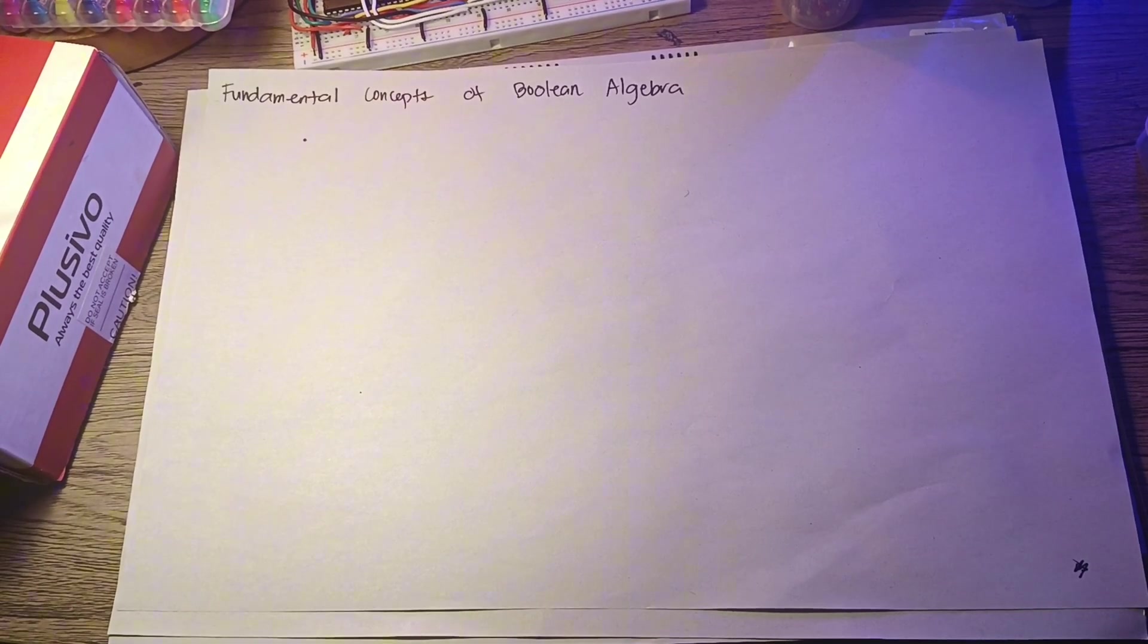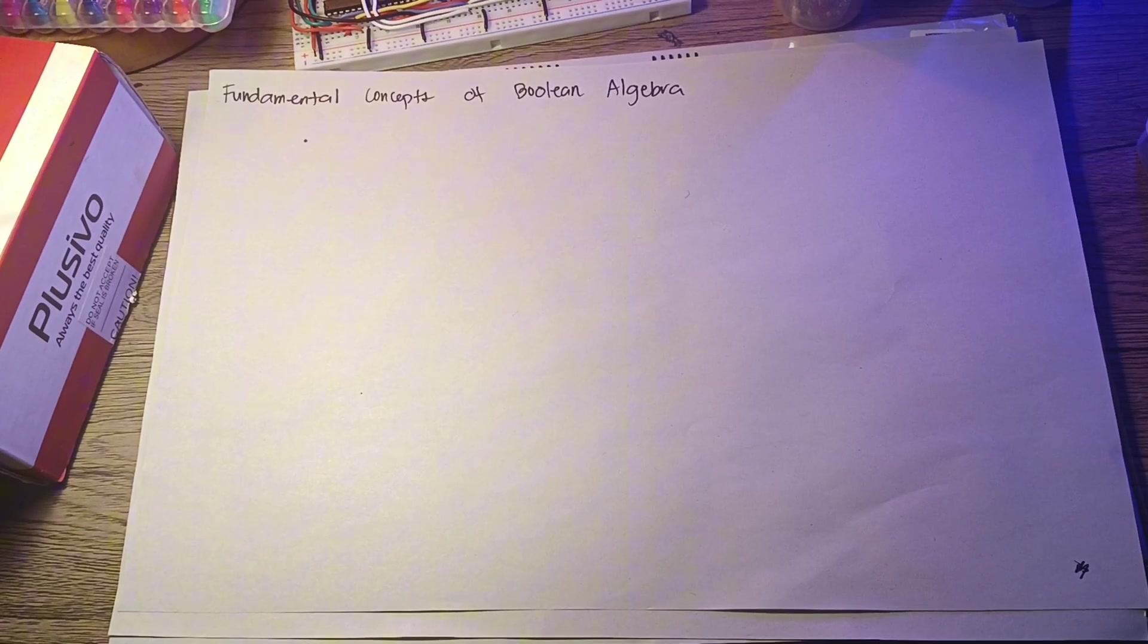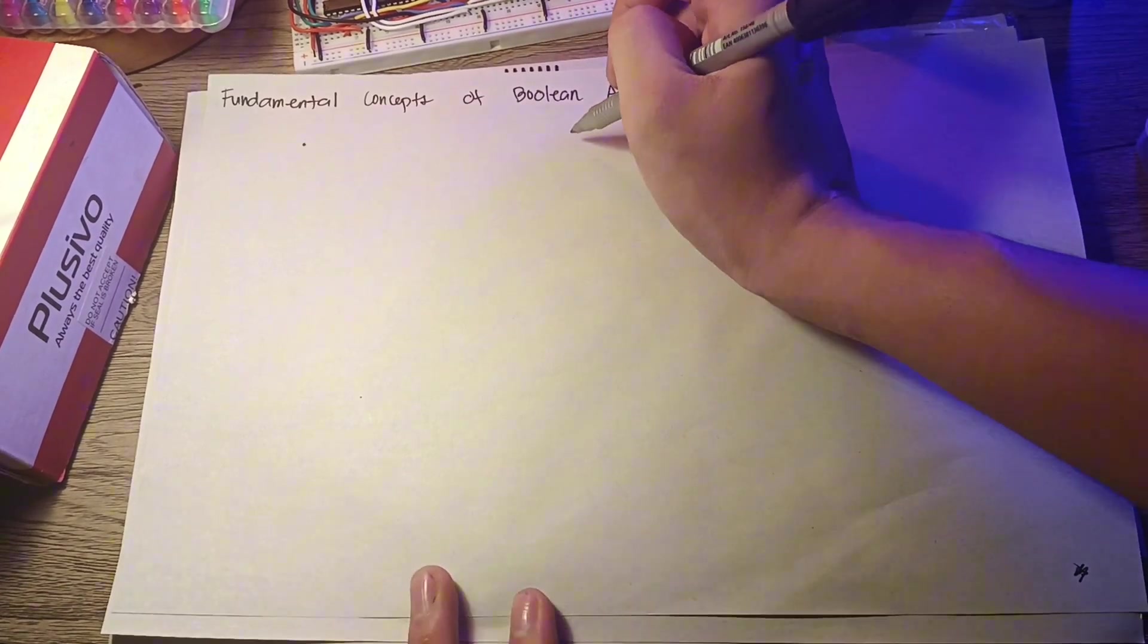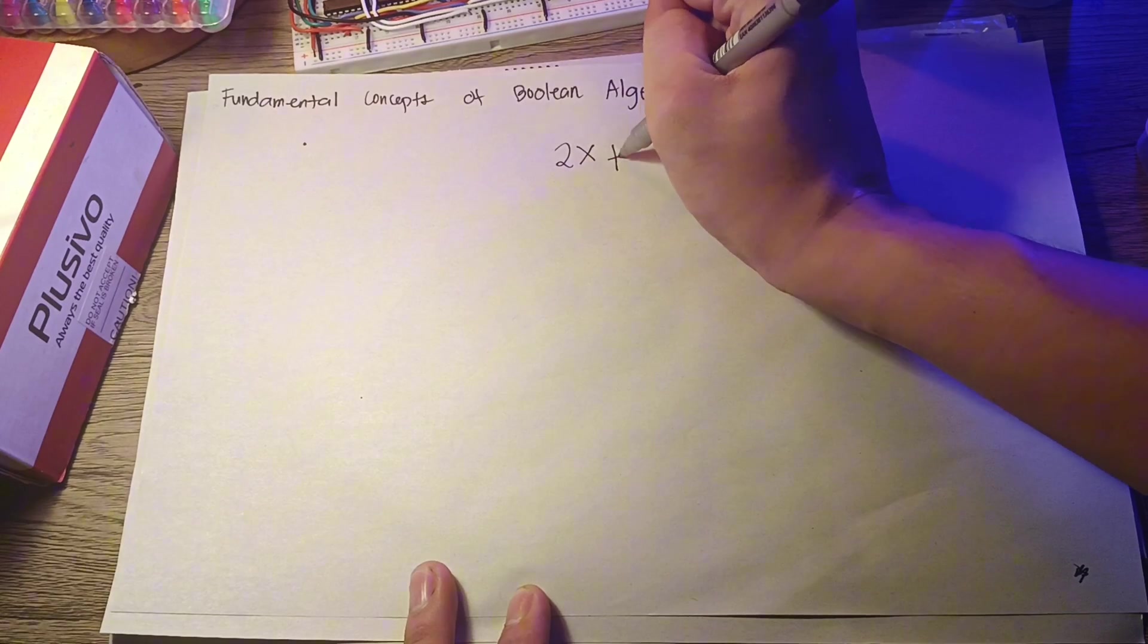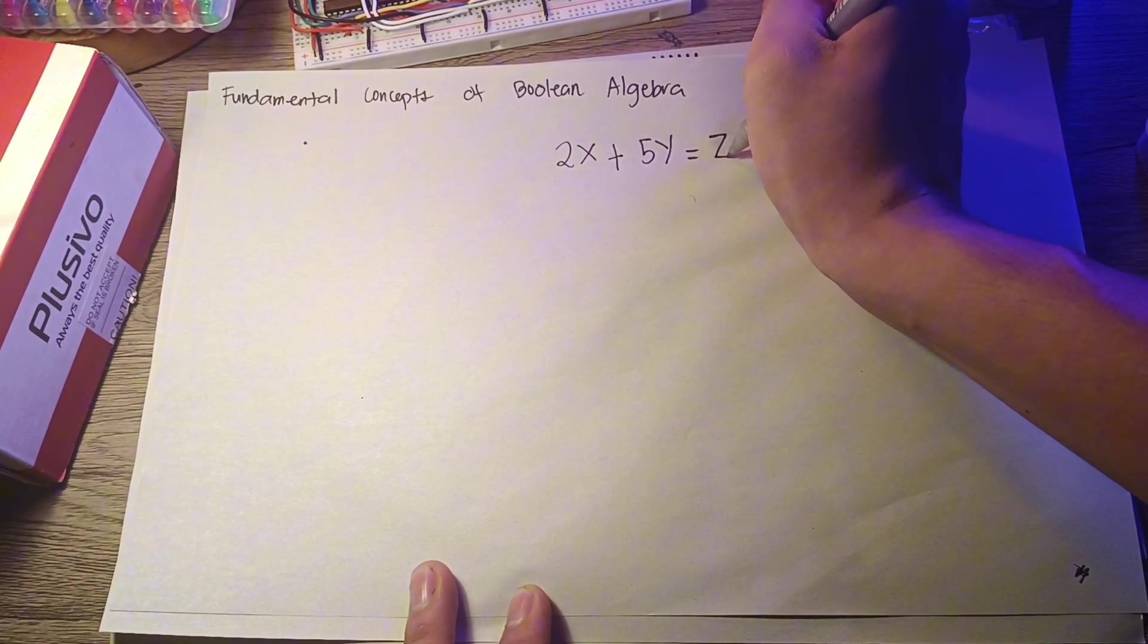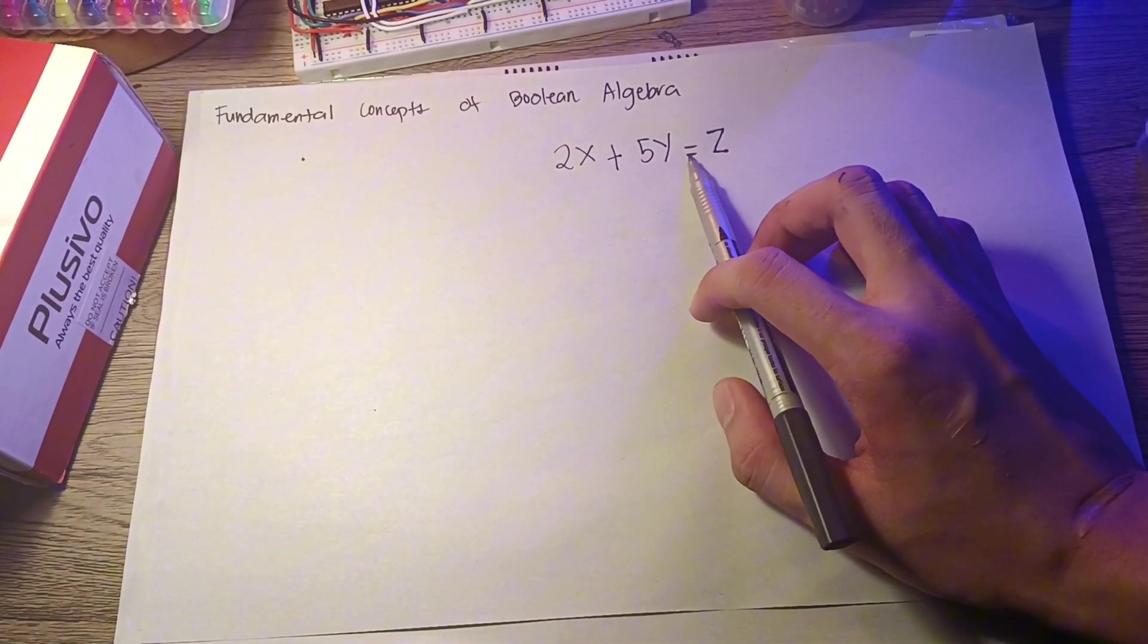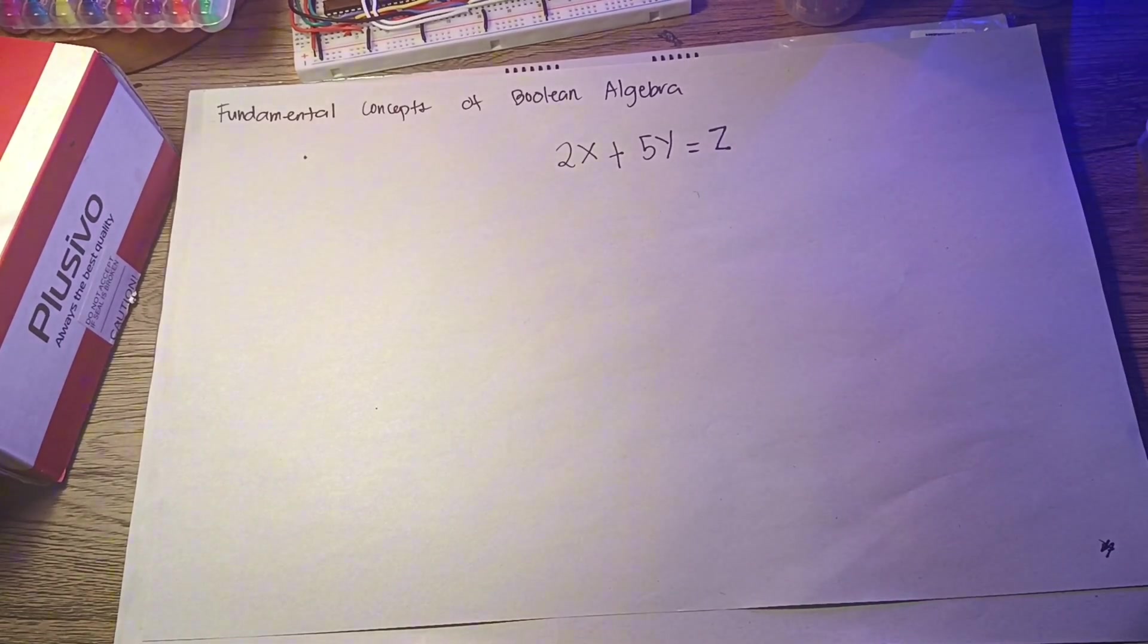When a variable is used in algebraic formula, it is generally assumed that the variable may take any numerical value. For instance, in the formula 2x plus 5y equals z, we assume that x, y, and z may range through the entire field of real numbers.